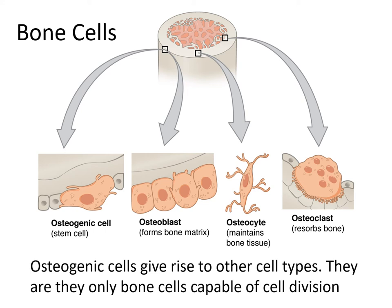Let's reacquaint ourselves with the four types of cells found within bone. Osteogenic cells are stem cells undergoing frequent mitotic divisions and can give rise to the other three cell types; you're most likely to find them in the deep layers of the periosteum. Osteoblasts form the bone matrix, laying down connective fibers, minerals, and so on. Osteocytes live within lacunae within the bone and maintain it. Osteoclasts can break down bone, reabsorb it, and if need be release minerals into the blood.